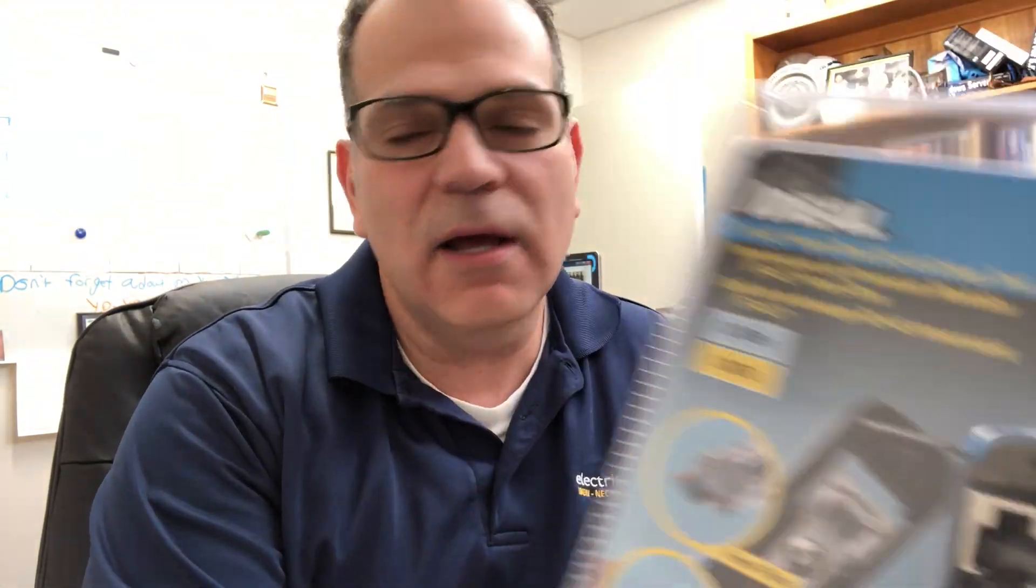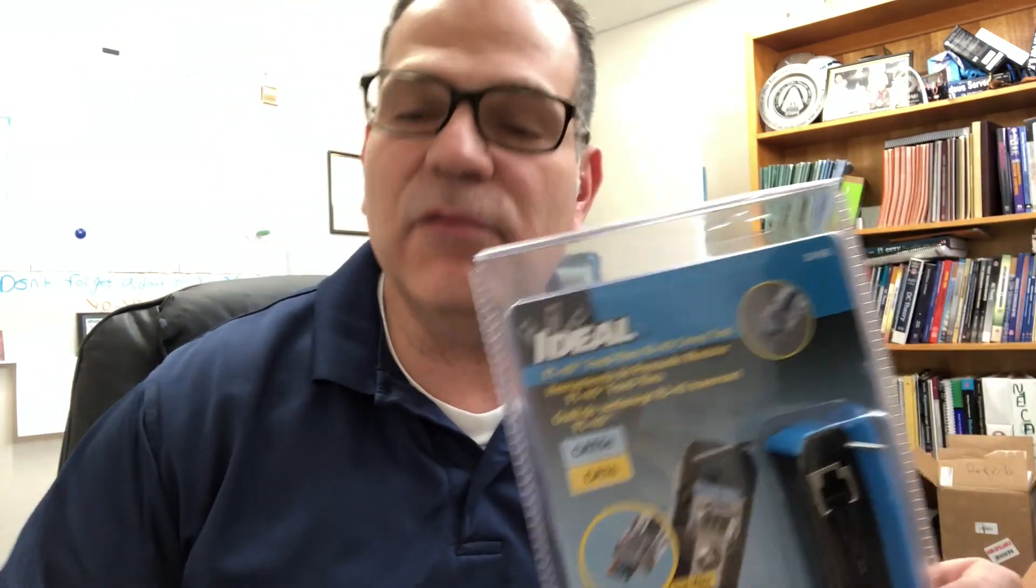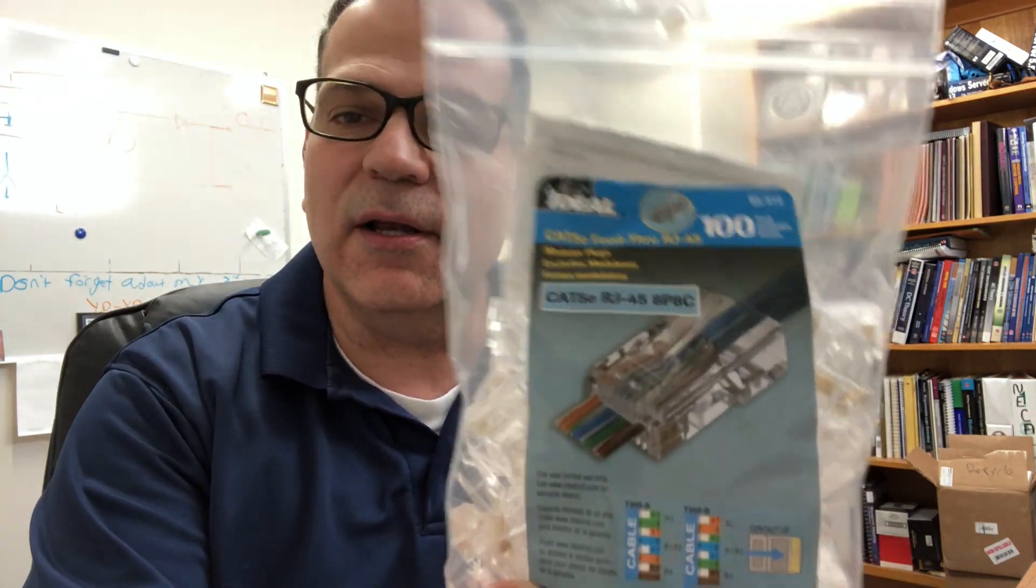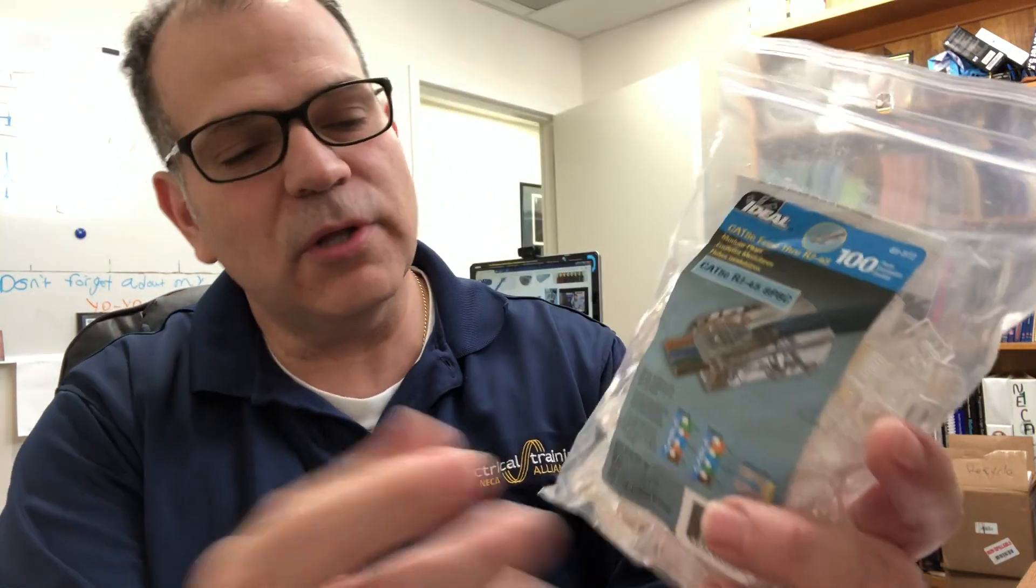It's called the Ideal FT-45. FT standing for feed through and 45 standing for RJ45. And if you're in the teledata industry you know what I'm talking about when I say an RJ45. RJ45 are these modular connectors that they use to make their category cable connection.